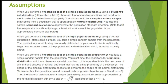When you perform a hypothesis test of a single population mean mu using a normal distribution, we call this a z-test. Usually you take a simple random sample from the population, the population you are testing is normally distributed, your sample size is sufficiently large, and you know the value of the population standard deviation — which in reality is rarely known.